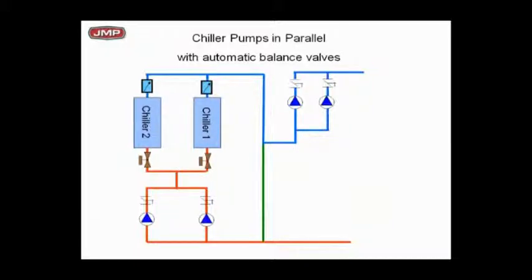But if you've got to pipe them this way, and they're not dedicated pumps in a primary or secondary loop, you need to put two-way isolation valves on each chiller as shown, and load limiters on each chiller just to protect them.